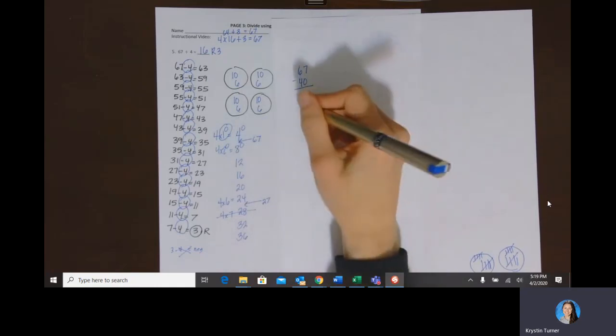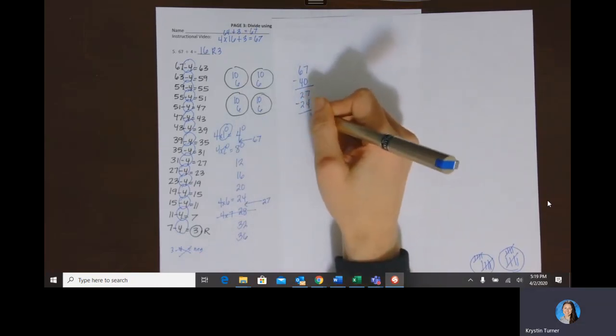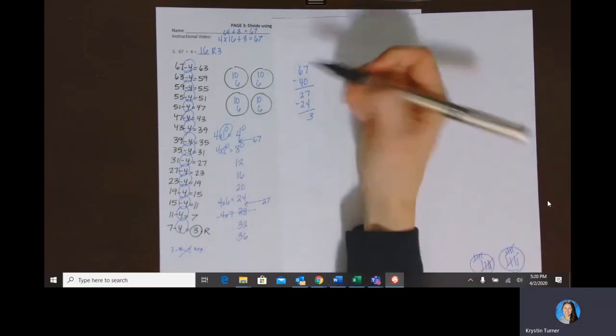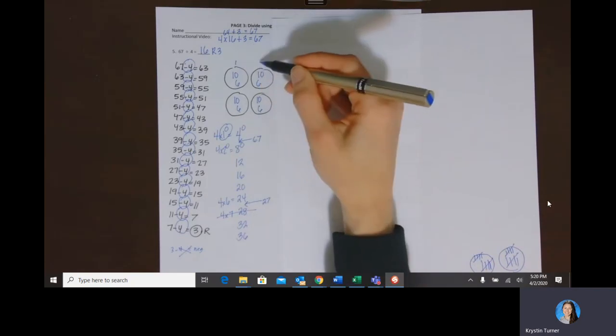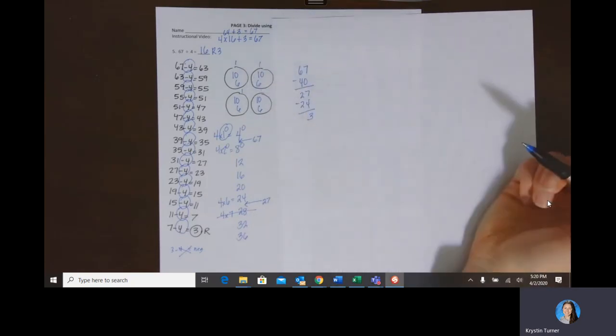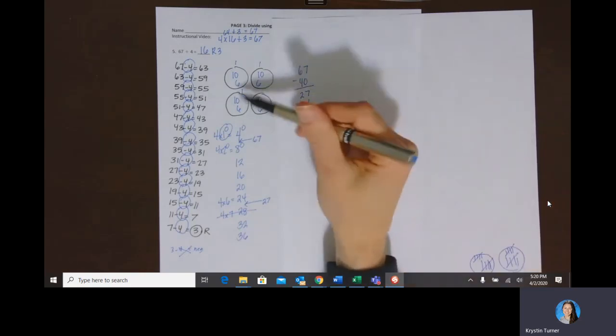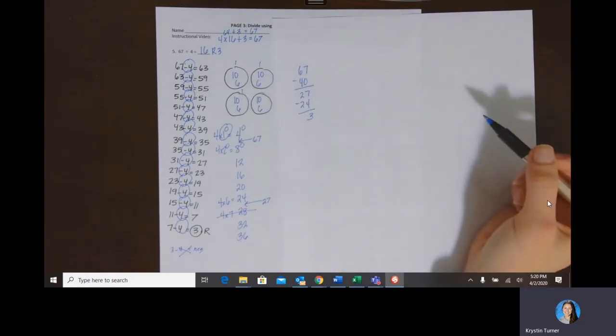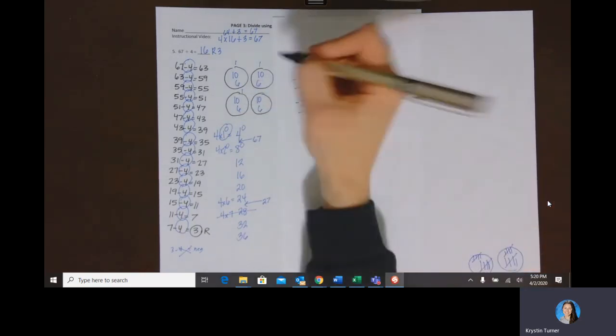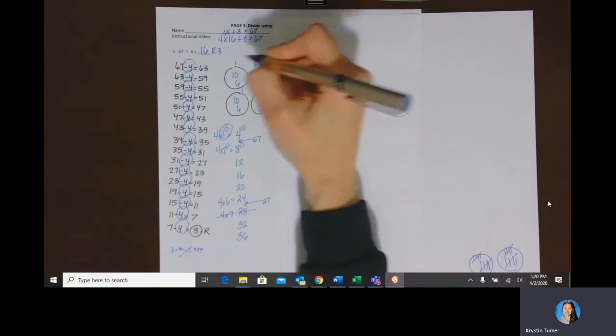And so what I have left is three, and I can't put them inside of here because I had one, two, three, then this one wouldn't have 17. I'd have three groups of 17 and one group of 16. That's not an equal amount. So these three have to be our remainders. They don't fit in there.